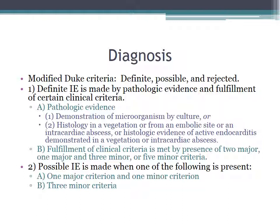Definite infective endocarditis is made by pathologic evidence and fulfillment of certain clinical criteria. Pathologic evidence consists of: one, demonstration of the microorganism by culture, or two, histology in a vegetation, from an embolic site, or an intracardiac abscess, or histologic evidence of active endocarditis in a vegetation or intracardiac abscess. Definite infective endocarditis can also be made if you fulfill the clinical criteria of two majors, one major and three minors, or five minor criteria.